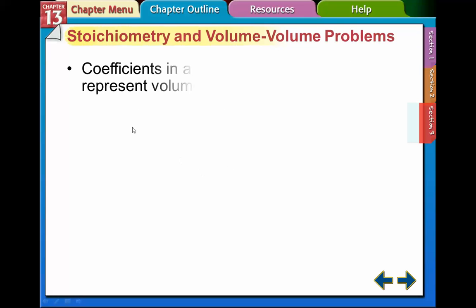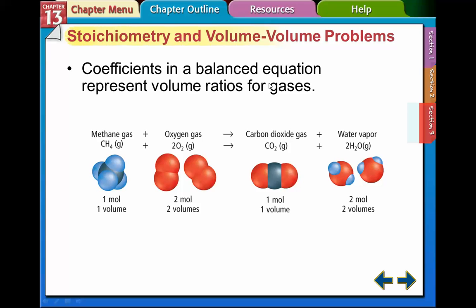We're going to extend that concept that the coefficients also represent volume ratios for gases. So this is another equation for the combustion of methane. It's methane plus 2 oxygens forms 1 carbon dioxide and 2 water vapor molecules. It's all gases here.